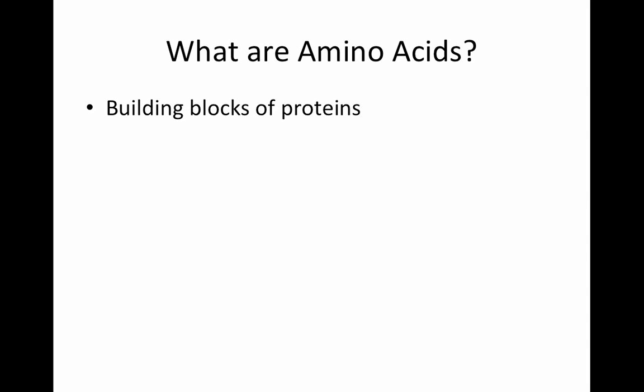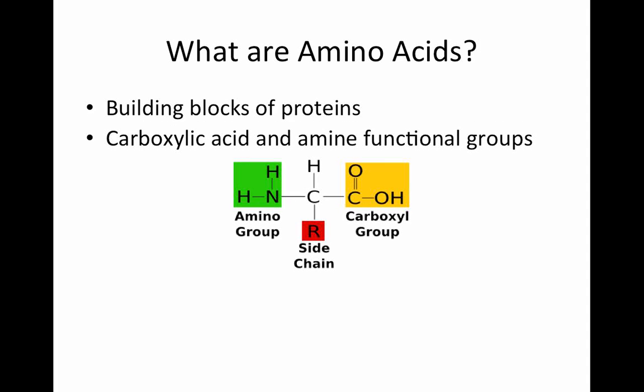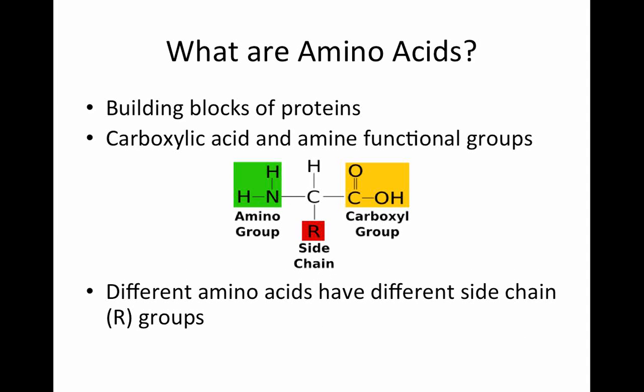All amino acids have similar structural components. Each amino acid has a carboxylic acid functional group, shown in yellow, and an amine group, shown in green. In addition, amino acids have unique side chain functional groups, shown in red. This R side chain is what differentiates between various amino acids and gives amino acids their unique properties.